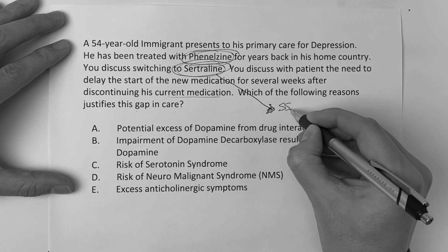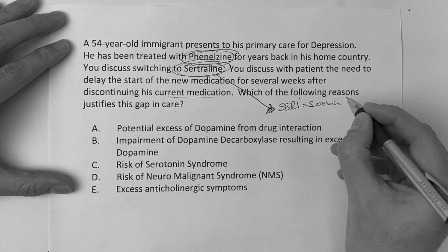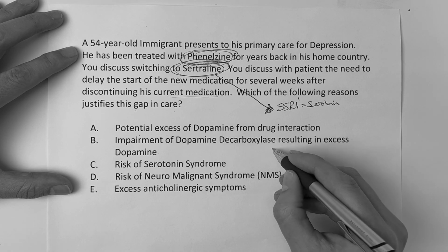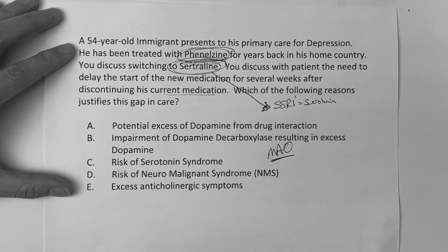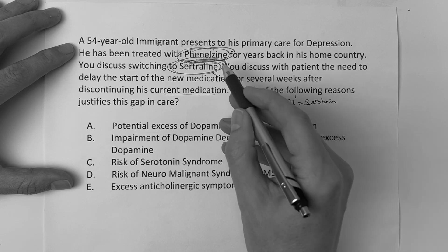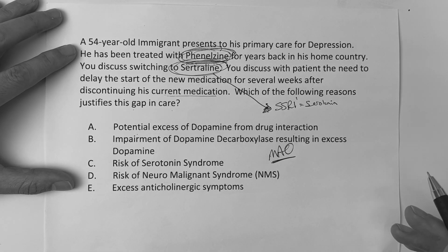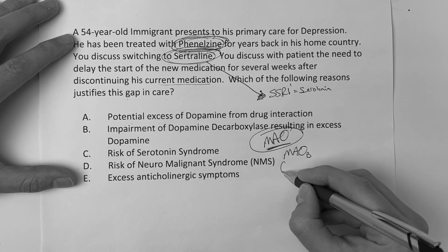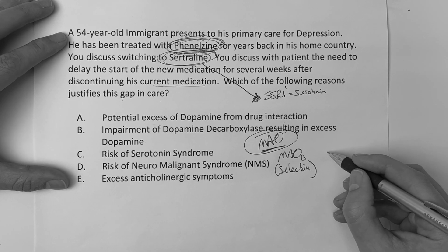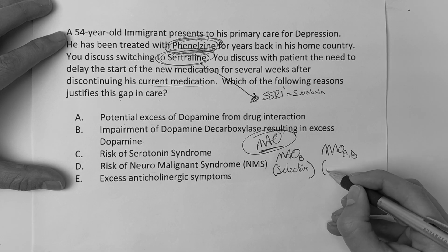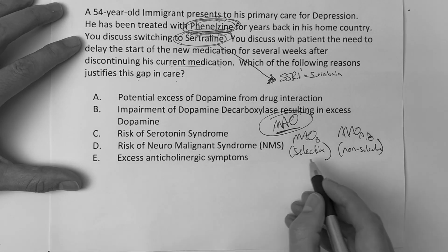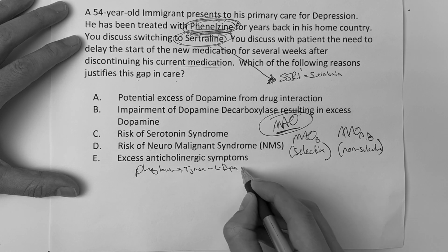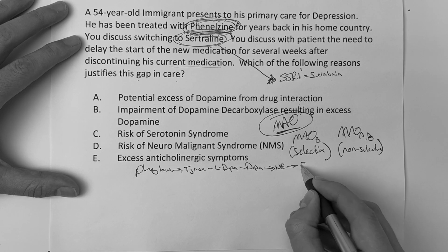Sertraline is an SSRI, which deals with serotonin. Now phenelzine — this is the one where you have to put your pharmacology knowledge to work. Phenelzine is an MAO inhibitor. You always hear 'MAOs — we don't prescribe much anymore because there's better options,' but you might still see people on these. When we think about MAOs: phenylalanine makes tyrosine, which makes L-DOPA, which makes dopamine, which makes norepinephrine, which makes epinephrine. MAO-B comes first, then MAO-A — and we've got to know the medications.